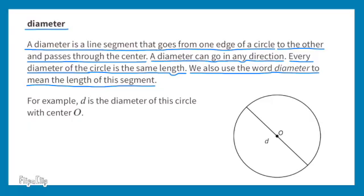We also use the word diameter to mean the length of this segment. For example, D is the diameter of this circle with center O. All these diameters are the same length for this circle.